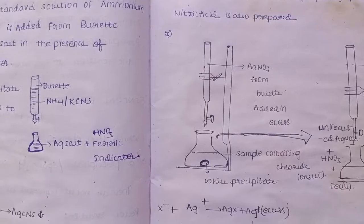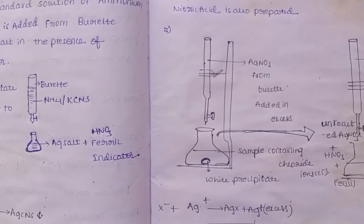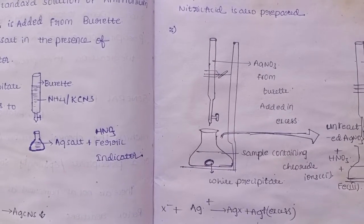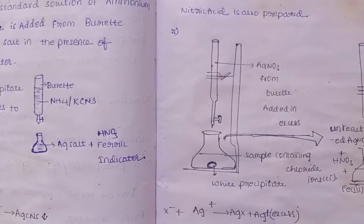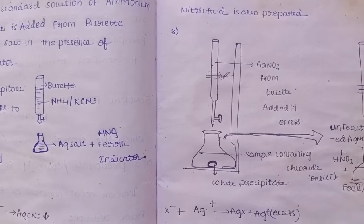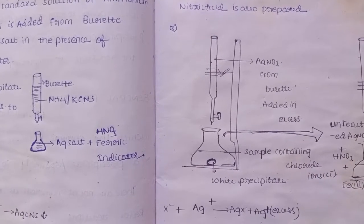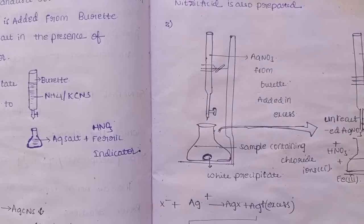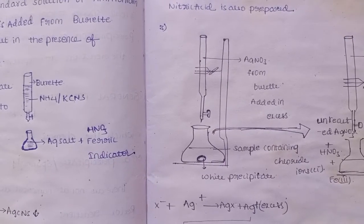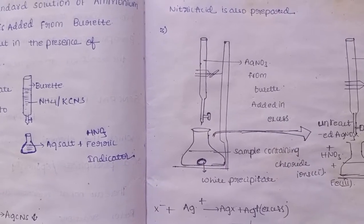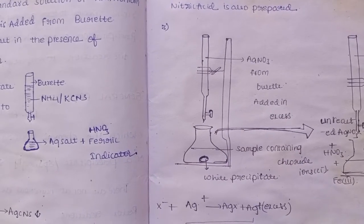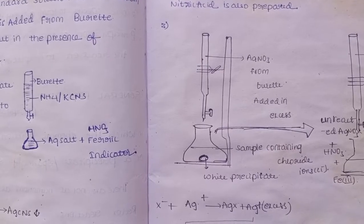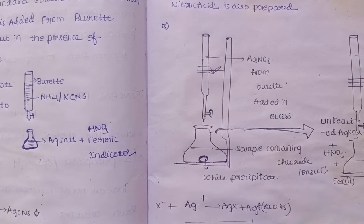For determining anions that precipitate with silver: if such anions are present, they will react and form a precipitate. This is how Volhard's method works. Thank you. If you want any information regarding any titrations or any other subject, please mention it in the comments and I will make a video on it.